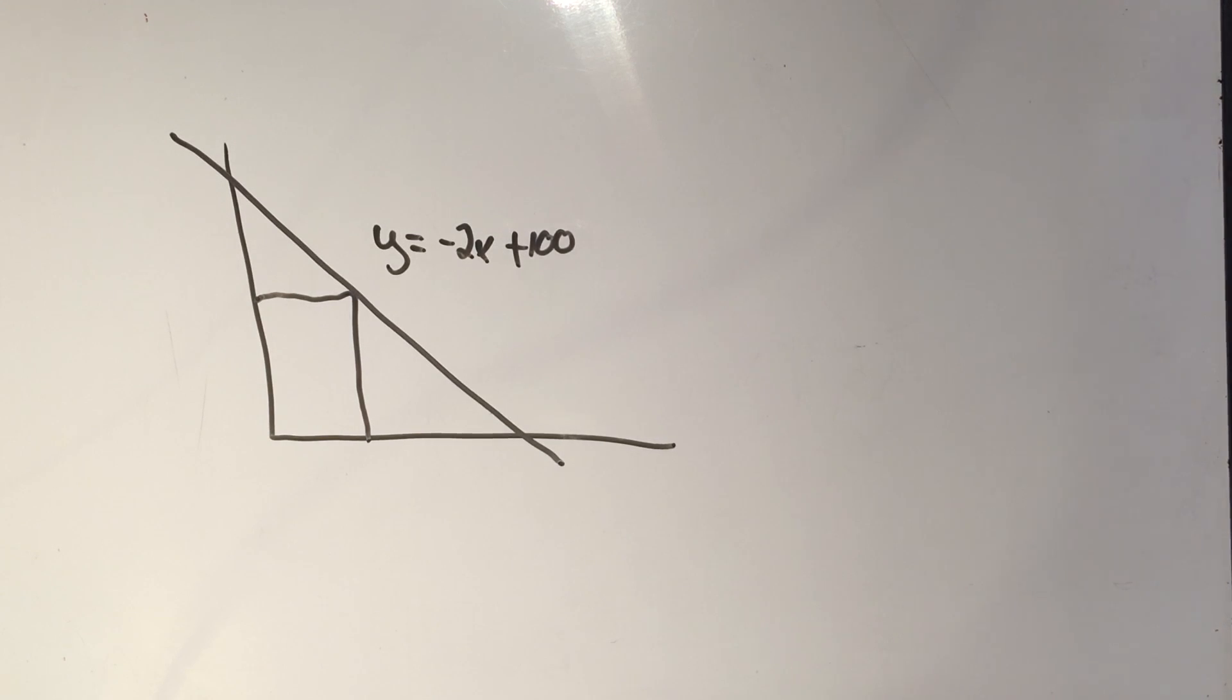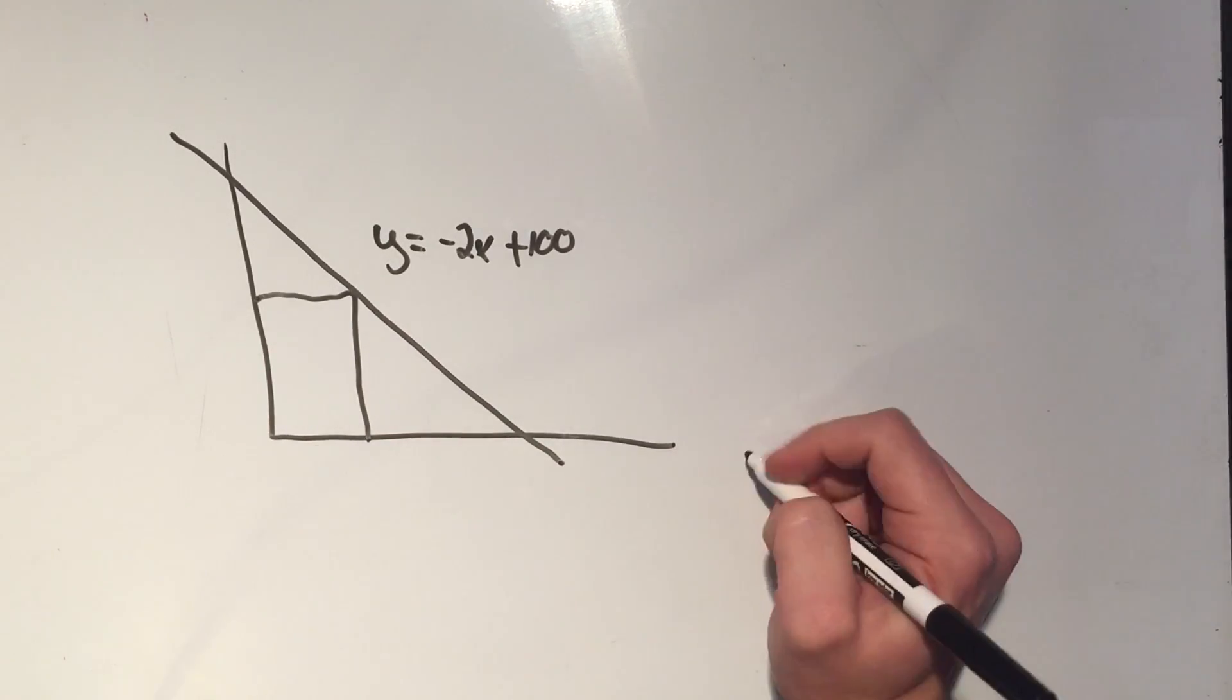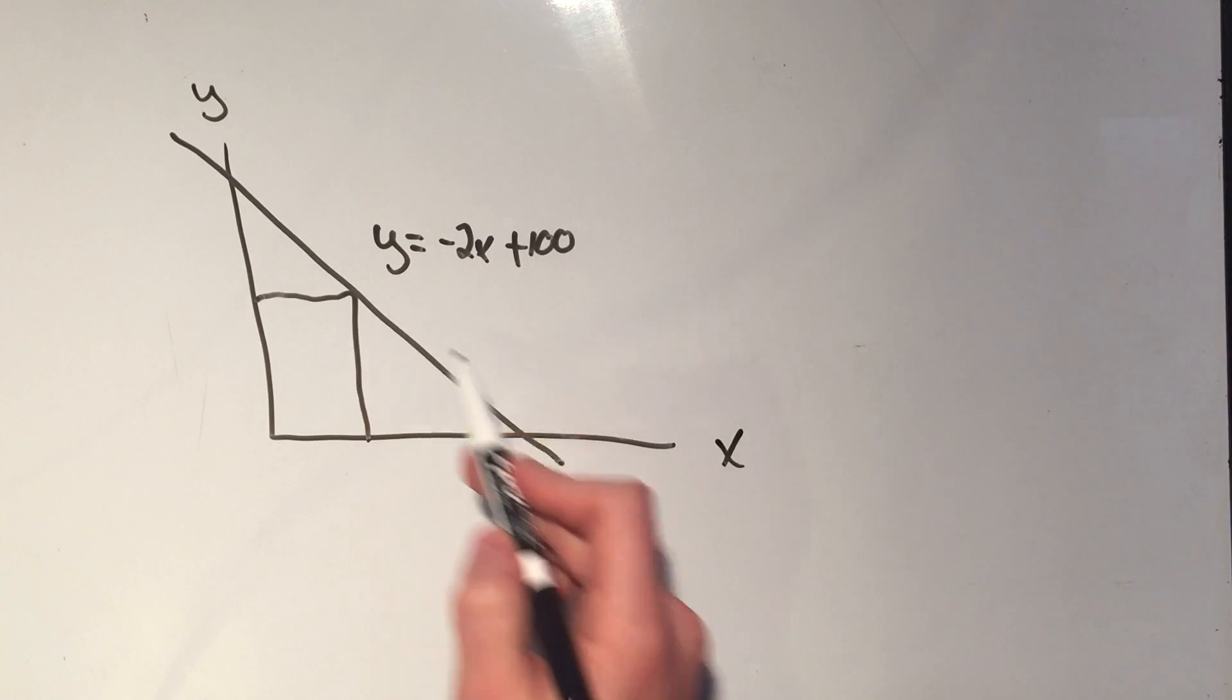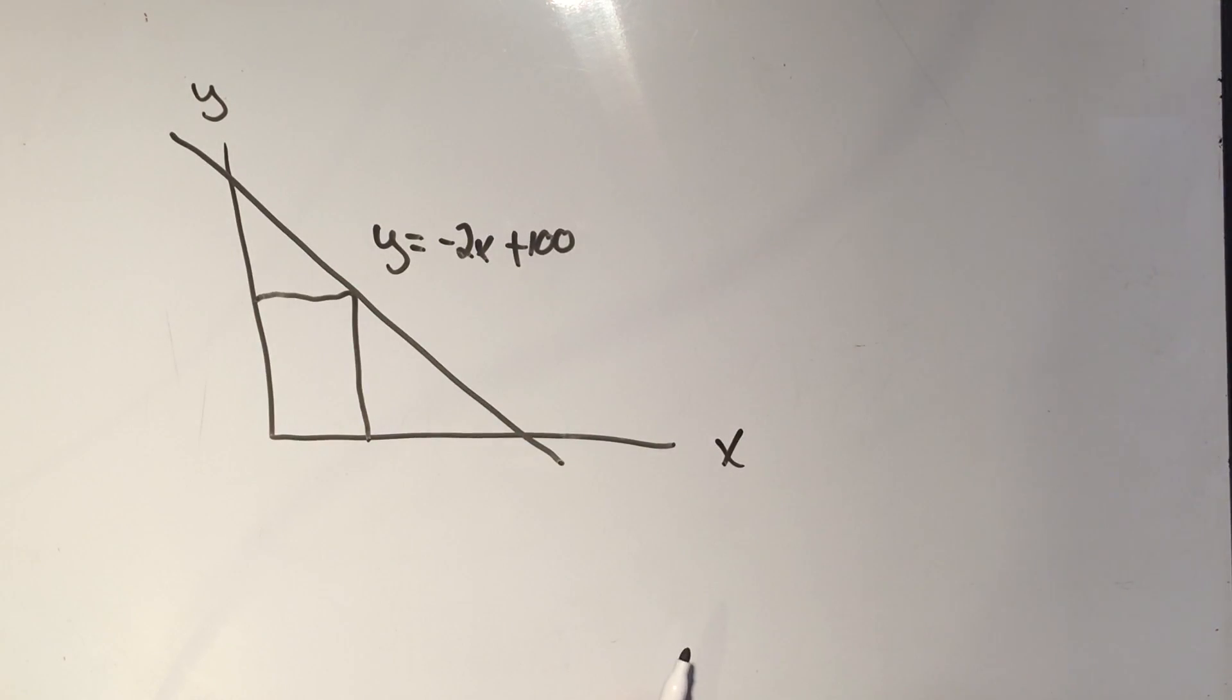Got a nice optimization problem for you here. I have this rectangle bounded by the x and y axes and this line y equals minus 2x plus 100.